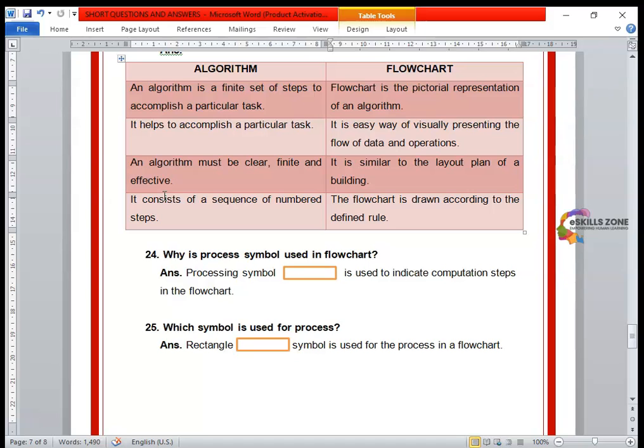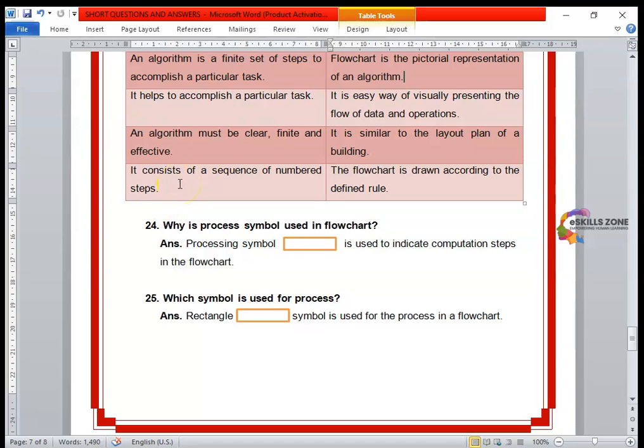Next point, algorithm: an algorithm must be clear, finite, and effective. Regarding flowchart, it's similar to the layout plan of a building. Next point, last point of algorithm: it consists of a sequence of numbered steps. For better understanding, next and last point: flowchart is drawn according to the defined rule.